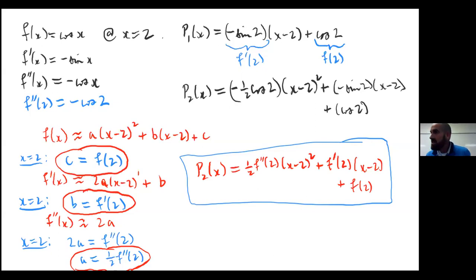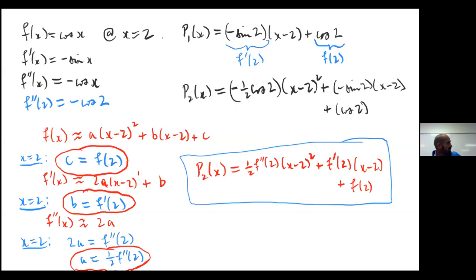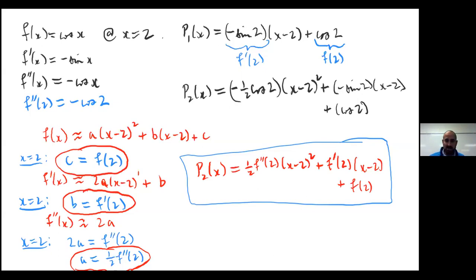Are you seeing the pattern here? We just differentiated both sides over and over again, and then equated things. Any questions on how we were proceeding? The only questionable step was taking the second derivative and getting 2a, but if there were higher powers of (x − 2), it would be obvious you'd still plug in x = 2 to get rid of the other terms. Now let's go over to Desmos to take a peek at what this second-order approximation looks like.